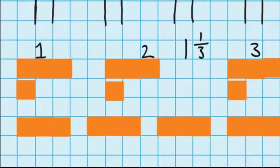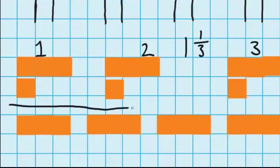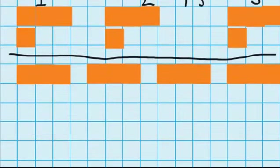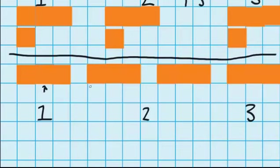Now if I go down a little bit further, you can see I've got the same question below here, but this time we're going to see if we can find a different way to share that out. Just like last time, I'm going to write down my people: first person, second person, and third person. But this time I'm going to share them out a little bit differently. I can see I've got three people and up here I've got one whole, two wholes, three wholes — so I know I can give everyone one whole, and then I just need to split up this last wafer.